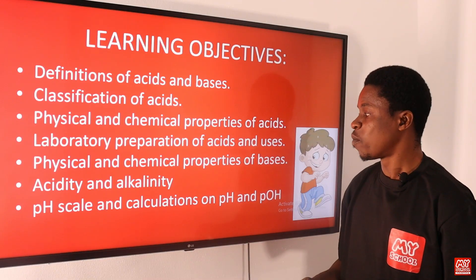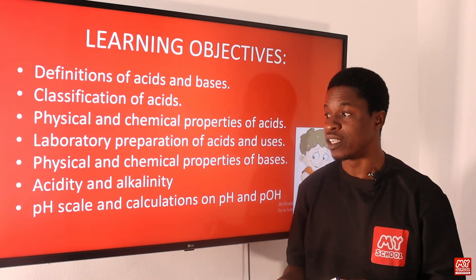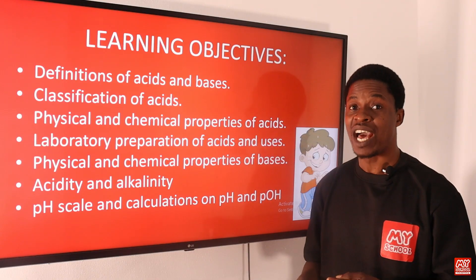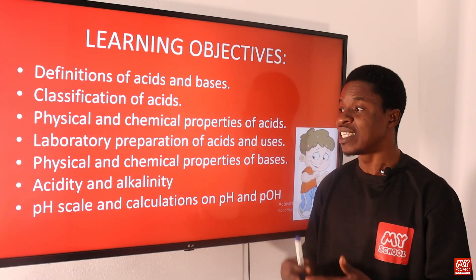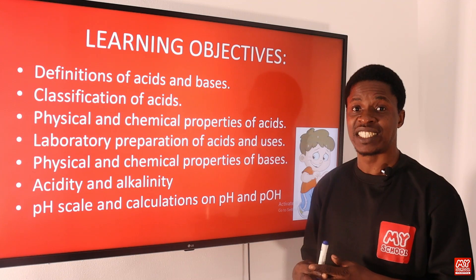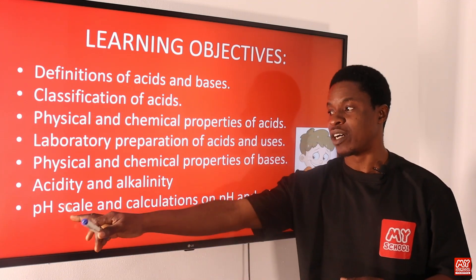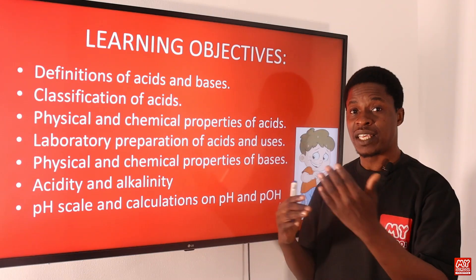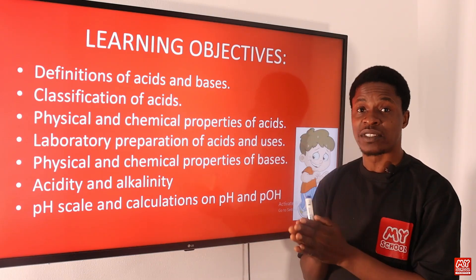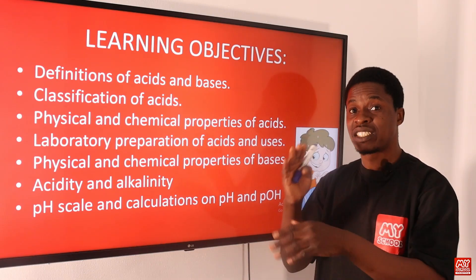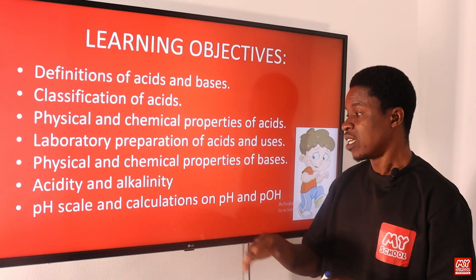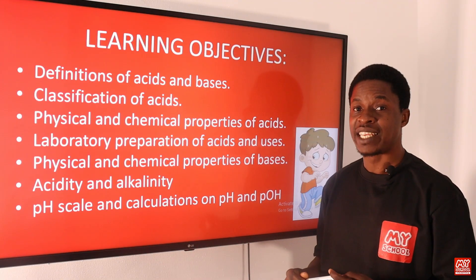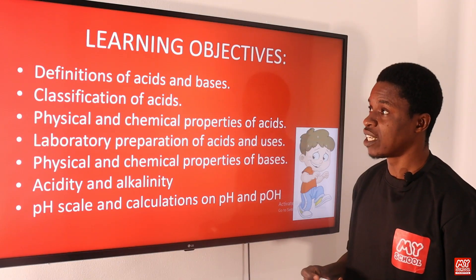We'll look at physical and chemical properties of bases as well. We look at acidity and alkalinity — how do we measure the level of acidity and alkalinity of substances? That talks about the pH scale, measuring the acidity and alkalinity of substances from 0 to 14. We look at the colors, and we talk about calculations on pH and pOH. Let's move on to the next slide.